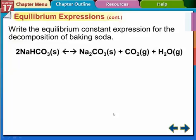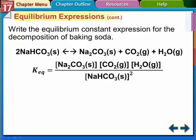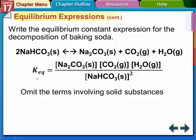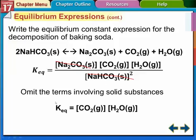This is the equilibrium for the decomposition of baking soda. If we put this in a stoppered, closed container and heated it up, we would get this equilibrium reaction — we actually did this same thing in lab a few weeks ago. So what's the equilibrium expression? We've got three products and one reactant. Normally we'd write all the concentrations of the products on top and the reactant on the bottom squared. But we can omit the solid substance terms, so we eliminate those two solids. The equilibrium expression is just the concentration of CO₂ times the concentration of water.